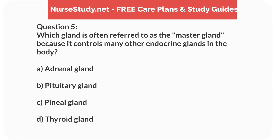Question 5. Which gland is often referred to as the master gland because it controls many other endocrine glands in the body? A. Adrenal gland. B. Pituitary gland. C. Pineal gland. D. Thyroid gland.